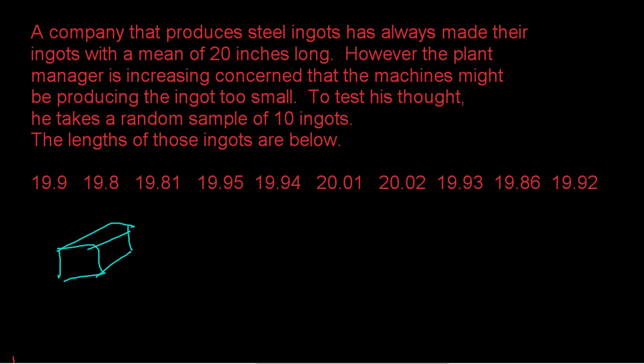So to test his thought, he takes a random sample of 10 ingots and the lengths of those ingots are below. So here are our lengths. Now, this is a sample. So the first thing you would need to do on your own, which you could use your TI-84 calculator to do, is to get the mean of our sample. And the mean of this sample, I went ahead and did it for you, is 19.914. So we have to ask ourselves, are we seeing a mean lower than 20 because the mean really is lower than 20 or are we seeing a mean slightly below 20 because it's just a sample.